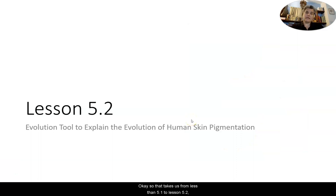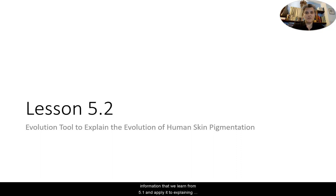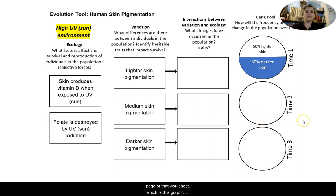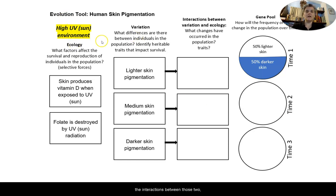That takes us from Lesson 5.1 to Lesson 5.2, which was the evolution tool, where you take the information learned from 5.1 and apply it to explaining the evolution of human skin pigmentation. The first thing we're going to look at is the front page of that worksheet — the graphic organizer — which has columns for ecology, variation, the interactions between those two, and then gene pool frequency.